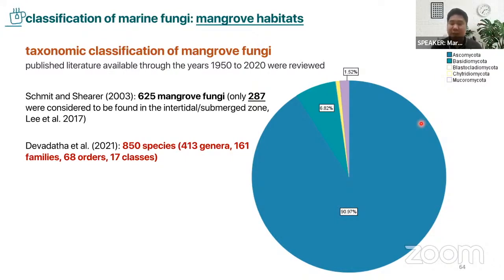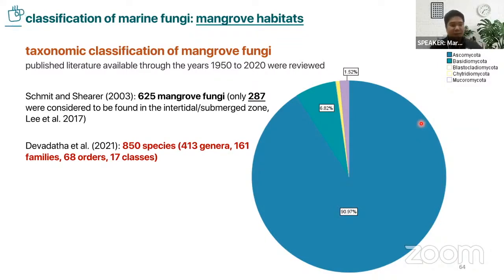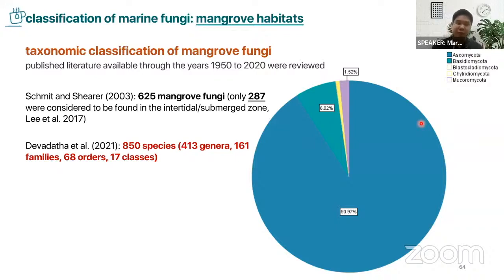Some marine mycologists doing next-generation sequencing techniques found out that chytrids are very dominant in their data when they do high-throughput sequencing. It's interesting, but we need good morphological data as well so we can determine whether they are truly thriving there, or maybe they are just remnants of the past.